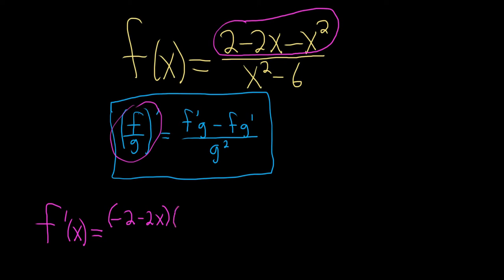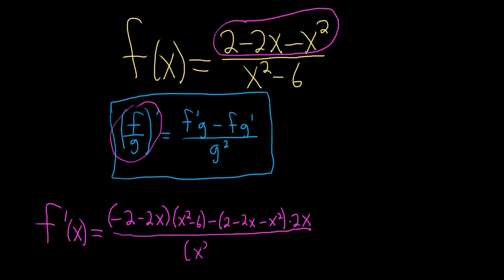So we have: the derivative of the top, which is negative 2 minus 2x, times the bottom, which is x squared minus 6, minus the top, which is 2 minus 2x minus x squared, times the derivative of the bottom, which is simply 2x, all over the bottom squared — that is, x squared minus 6, quantity squared. Let's check our work: derivative of the top is negative 2 minus 2x, times the bottom x squared minus 6, minus the top 2 minus 2x minus x squared, times the derivative of the bottom 2x, all over the bottom squared. That checks out.